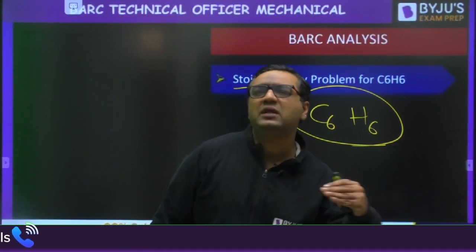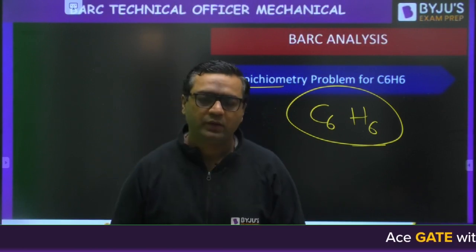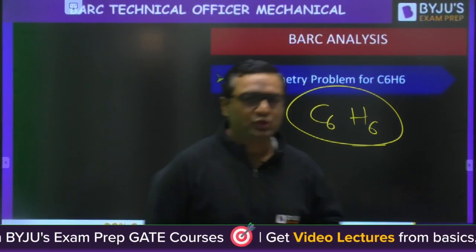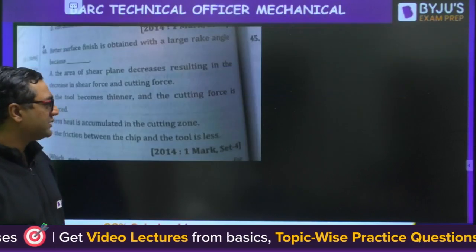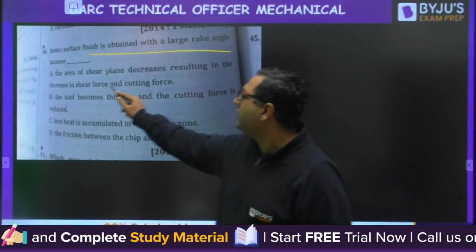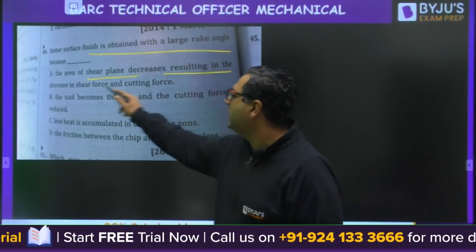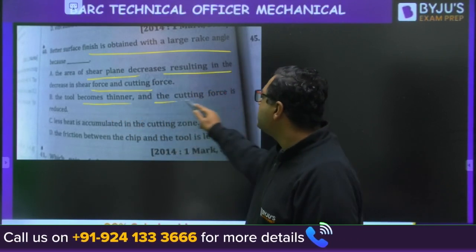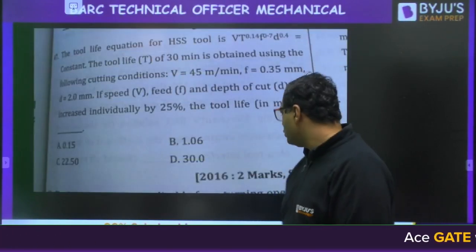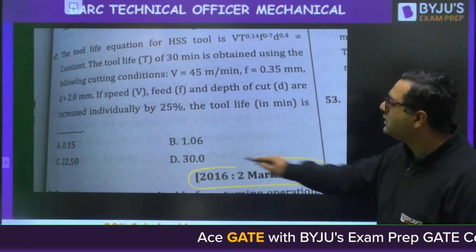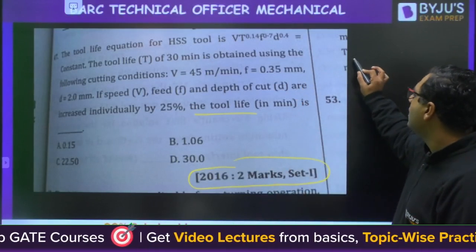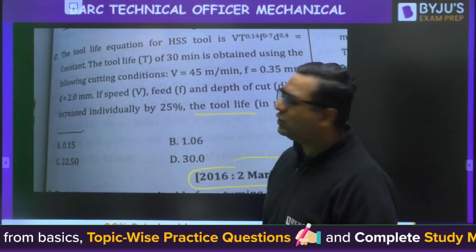Those students also shared some similar questions that BARC asked. For instance, one question from GATE PYQ asked: 'Better surface finish is obtained with a large rake angle — the area of shear plane decreases resulting in decrease in shear force and cutting force; the tool becomes thinner and the cutting force is reduced.' This was from GATE 2014, and a similar question appeared. Another similar question was from GATE 2016 for two marks, about tool life using the Taylor tool life equation or modified Taylor tool life equation.